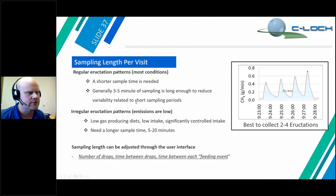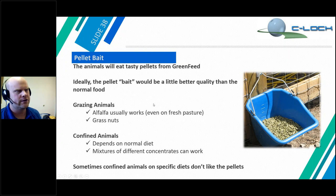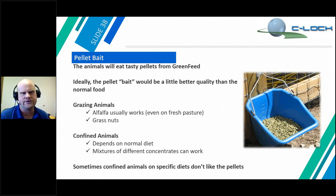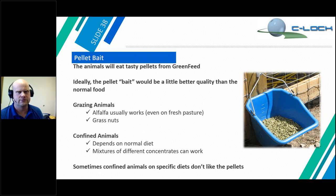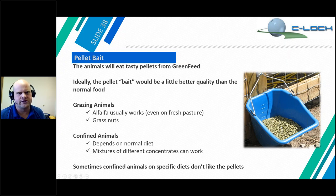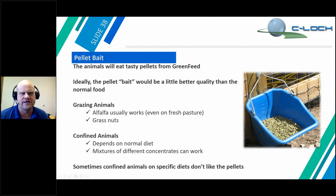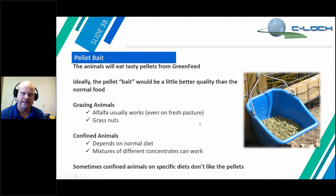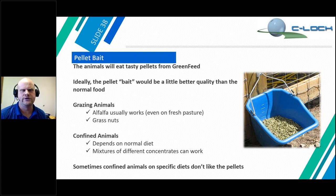If you have a low gas-producing diet — like a concentrate diet or a restricted diet near or below maintenance — you might need to sample longer because animals won't eructate as frequently. On high-producing diets, animals eructate every 45 to 60 seconds; on diets that produce less gas, they eructate less frequently, and it's better to sample longer to get a true estimate of emissions. As far as bait, you must use a pellet with a diameter less than nine millimeters. Larger pellets can jam the GreenFeed — we have a clutch mechanism so it won't break, but it won't dispense.